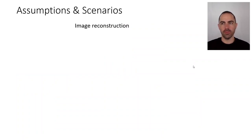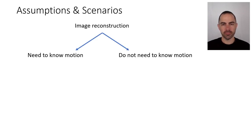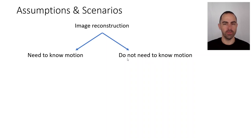Now let's classify these methods by their assumptions and scenarios. There are basically two types when we look at motion: some algorithms need to know the motion to do image reconstruction, and others do not need to know the camera motion, optical flow, or any other type of motion to perform image reconstruction.